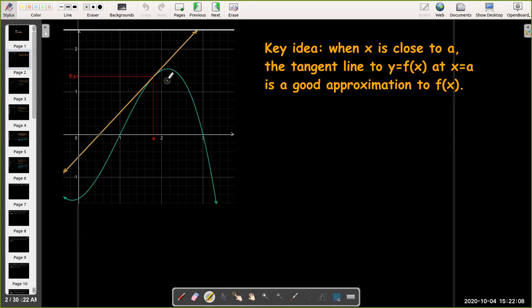In fact, in this graph, you can't even tell the difference. The tangent line overlaps the graph of the function for a good portion of the graph when it's close to a.